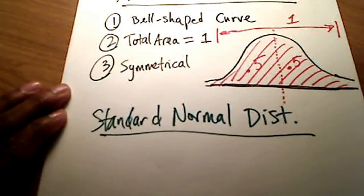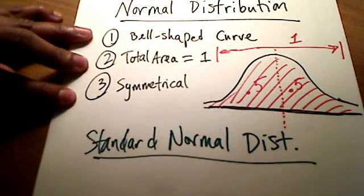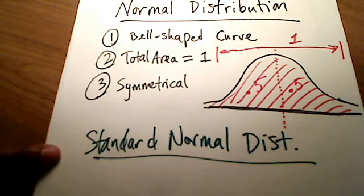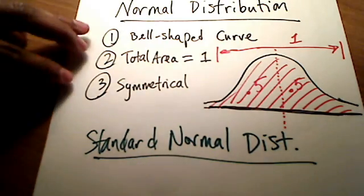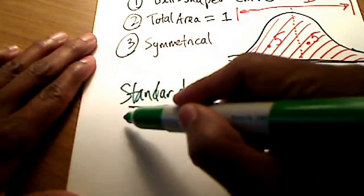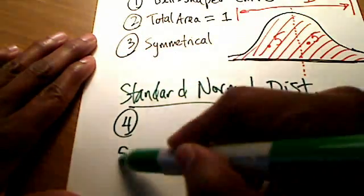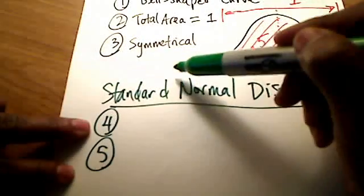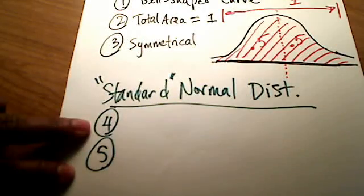So a normal distribution, again, are these three things: bell-shaped, total area is 1, and symmetrical. Standard normal kind of uses these three things, but kicked up one more notch with two other things. We'll mark them 4 and 5. Two other things should come to mind when that word standard is used.